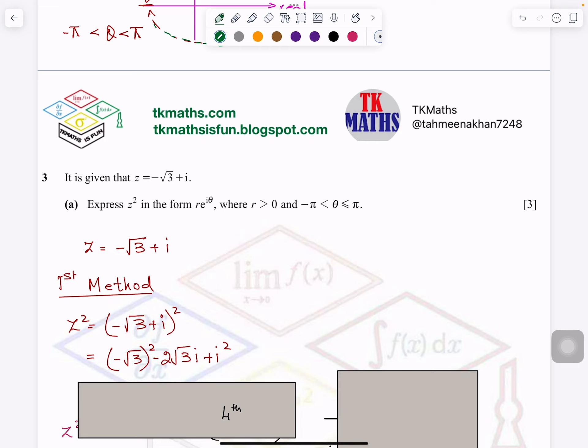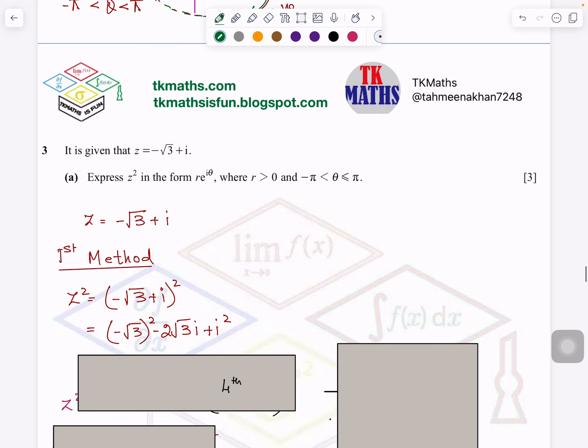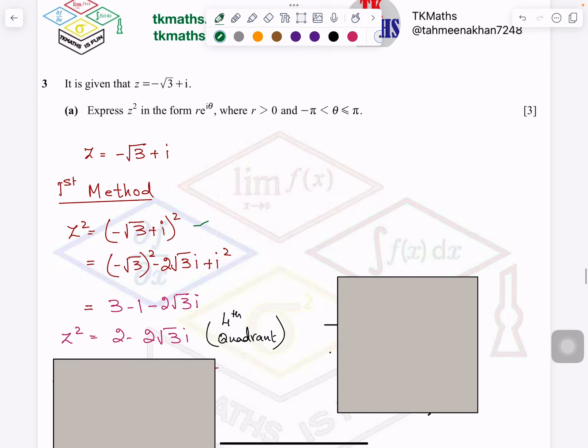First method I am doing, I am finding out Z square, by squaring the given complex number. So I am simply squaring it and expanding it like algebra and I got a new complex number which is 2 minus 2√3 iota.